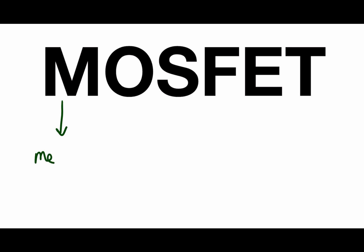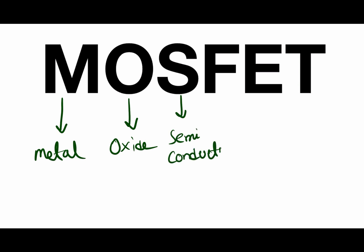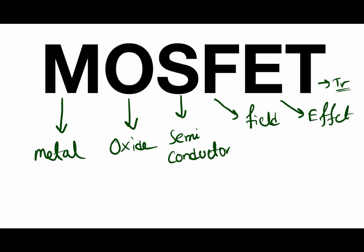So first, let's see what MOSFET stands for. M stands for metal, O stands for oxide, S stands for semiconductor, F stands for field, E stands for effect, and T stands for transistor.